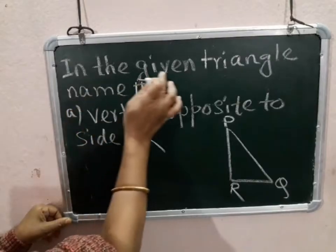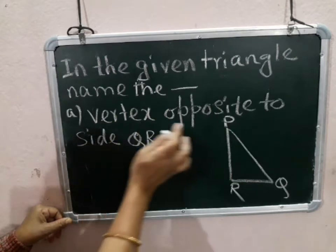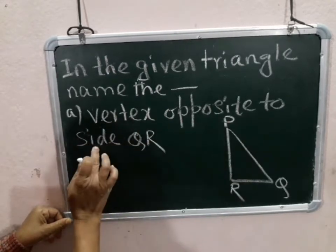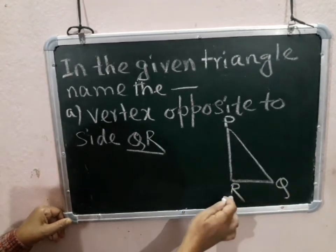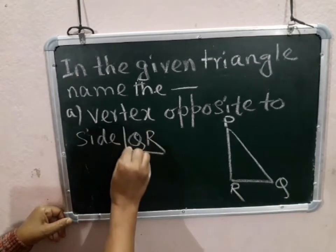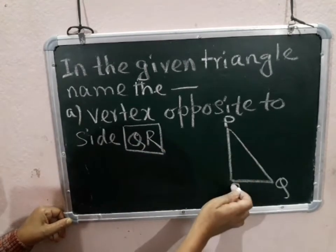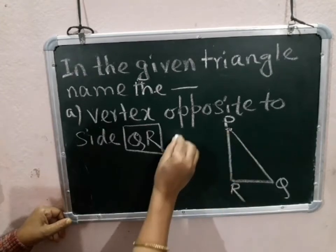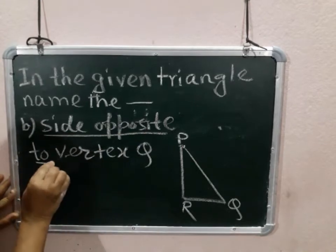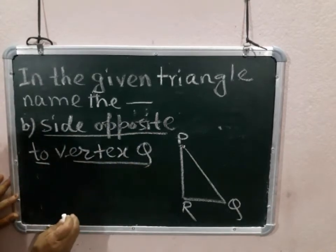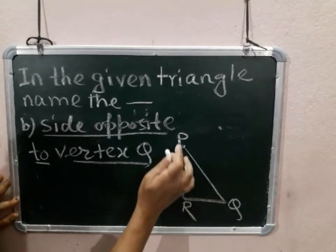Next question: in the given triangle PQR, name the vertex opposite to the side QR. The side given is QR. The opposite vertex of QR is P. Next question: find the side opposite to vertex Q in triangle PQR.